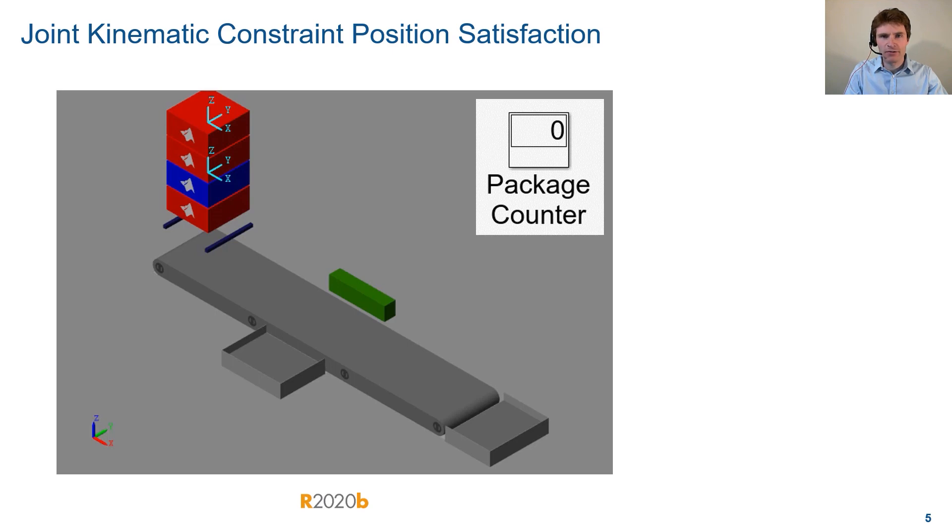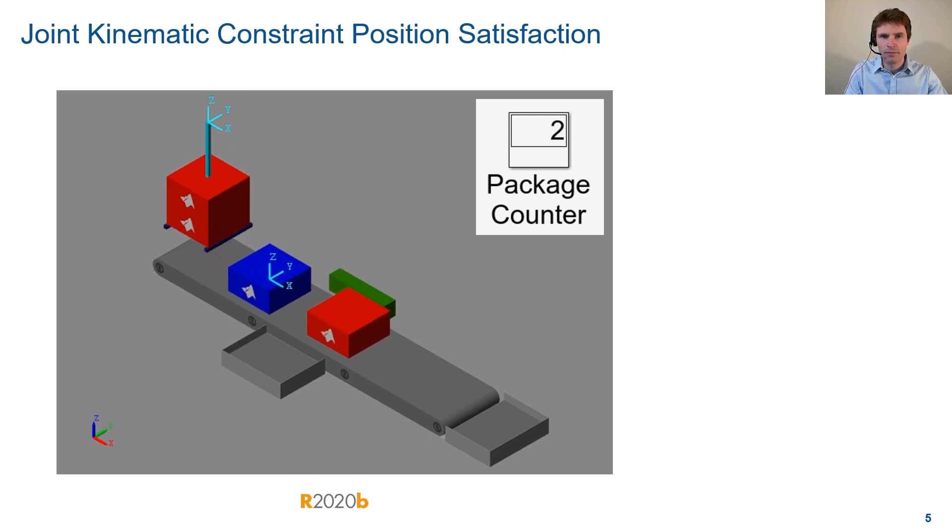Before my package is delivered by a drone, it must first be sorted at a facility. Here I have a simple conveyor of packages. I want to sort blue packages from red packages. I want to run a long simulation, but I know that only four packages can be on the conveyor at any given time. I therefore use variable mode joints to quickly and easily recirculate the minimum number of packages to perform a long simulation.